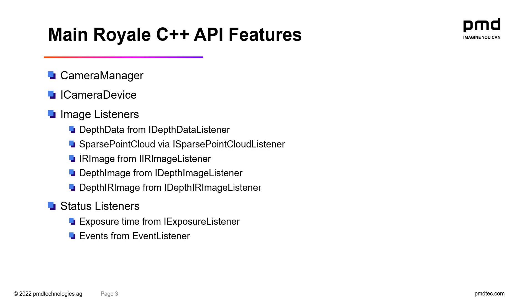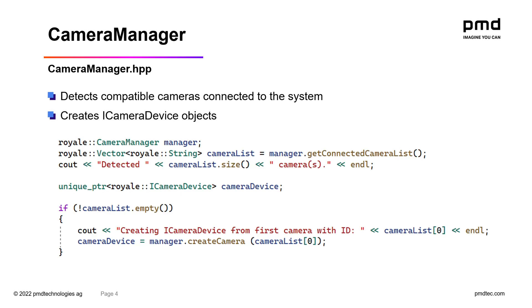Below are the main features of the Royale C++ API that we will cover in this video. Starting with the Camera Manager: the Camera Manager is responsible for detecting compatible cameras which are connected to your system, and it's also responsible for creating iCameraDevice objects for those cameras. In the example below, we request a list of connected cameras from Camera Manager and then create an iCameraDevice object from the first camera detected.